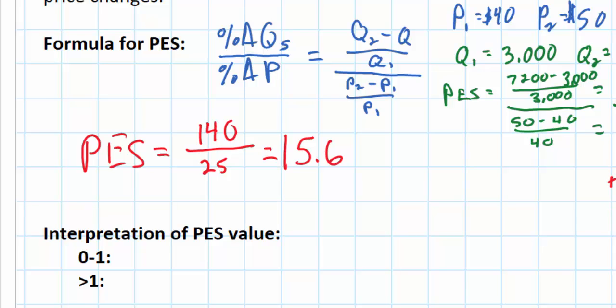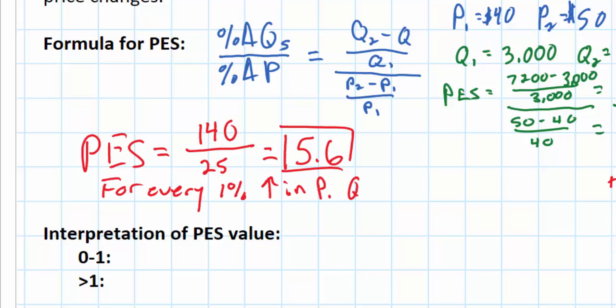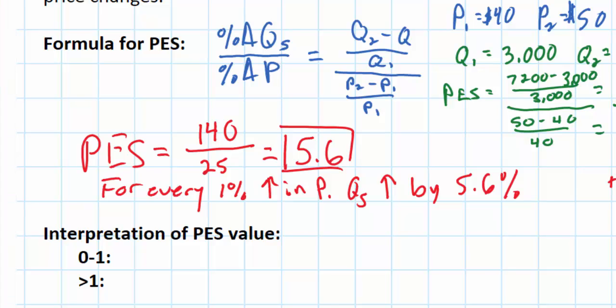What does that number tell us? The number 5.6 tells us that for every 1% increase in the price, the quantity supplied increased by 5.6%. That's what the coefficient for price elasticity of supply will always tell us — whatever the value is, it tells us by how much, as a percentage, the quantity supplied will increase for every 1% increase in the price. Of course, if the price of a good falls, then the quantity supplied will decrease, and the coefficient would tell us by how much quantity supplied would decrease for every 1% decrease in the price.